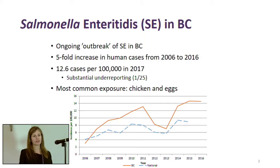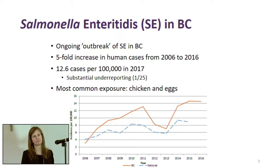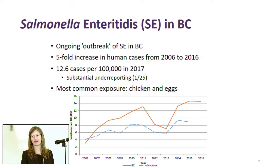Here in BC we've been having a problem with Salmonella enteritidis for the last 10 years, with a five-fold increase in rates that haven't been attributed to one specific cause — we call it an ongoing 10-year outbreak. We have about 12.6 cases per hundred thousand people, and we know this is a vast under-representation of actual cases. For every diagnosed case, there are probably 25 that go undiagnosed in British Columbia.